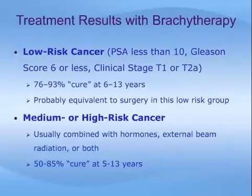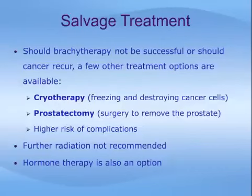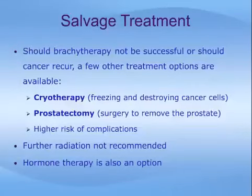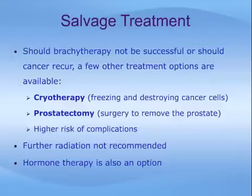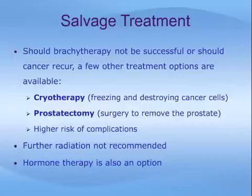Prostate cancer risk is defined in detail in separate modules. Should brachytherapy not have been successful or if the cancer recurs, a few other treatment options are available. Cryoablation or cryotherapy — involving freezing and destroying cancer cells — may be used as a second attempt at cure or control, and rarely a prostatectomy may be performed. In either case, the chance of complications is higher after brachytherapy than in previously untreated men, as radiation affects surrounding tissues. Further radiation is not usually recommended, as an organ that has been radiated once will not respond to another course. Hormone therapy — involving medications or surgery to stop production of testosterone, which fuels prostate cancer growth — is also available for recurrent disease.